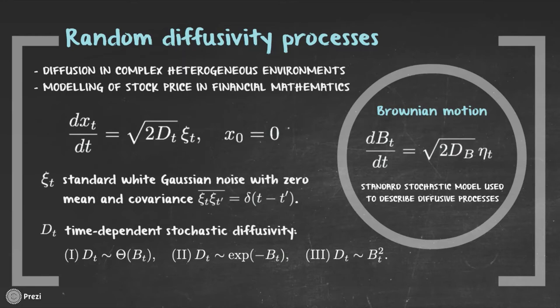In this paper, we defined the stochastic diffusivity as a function of Brownian motion. In particular, three models are analyzed.